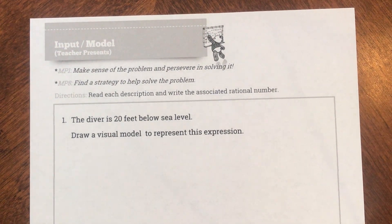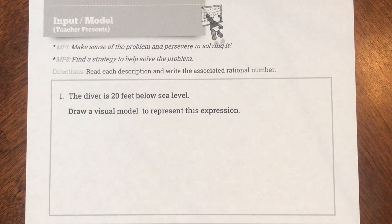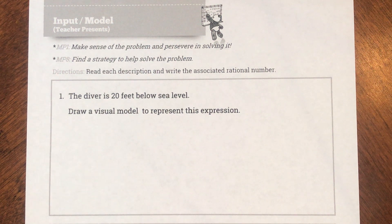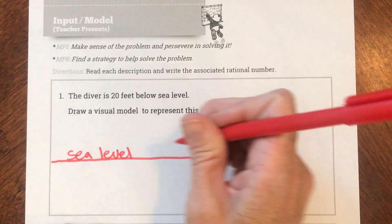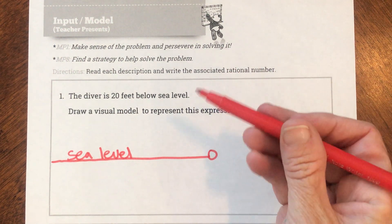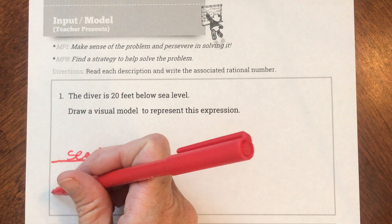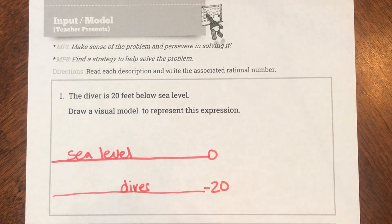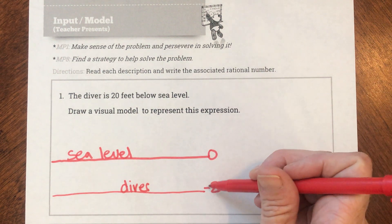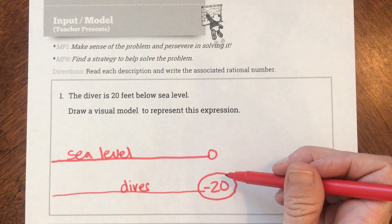Here is my first question: the diver is 20 feet below sea level. I'm talking about elevation. They want me to draw a visual model to represent this. Sea level would be here at zero. If the diver is below sea level, he's going to be down here at negative 20 — which makes sense because he's going to be under the water. Below sea level, we put a negative, so that would be negative 20.